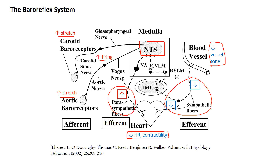You can reverse all of these arrows. So if afferent firing rate were to go down, that would depress parasympathetic and increase sympathetic firing rate, leading to an increase in arterial pressure.